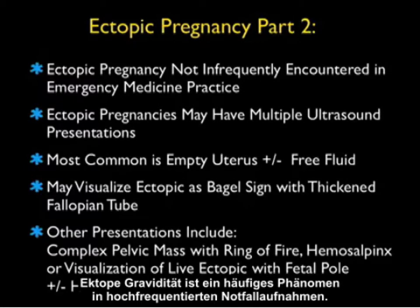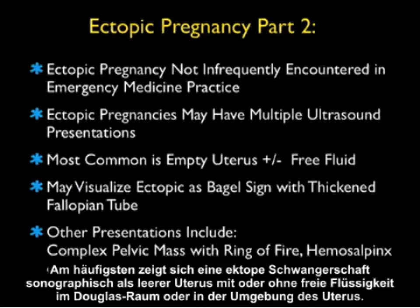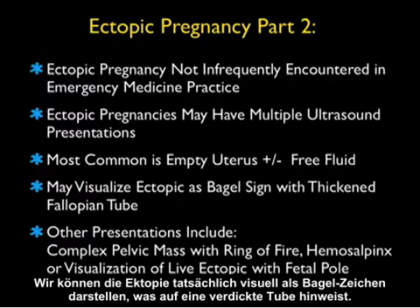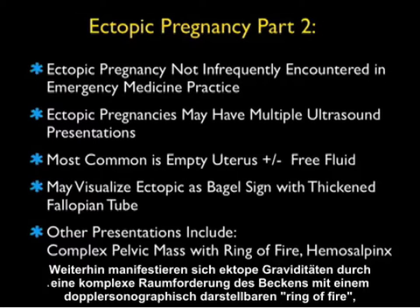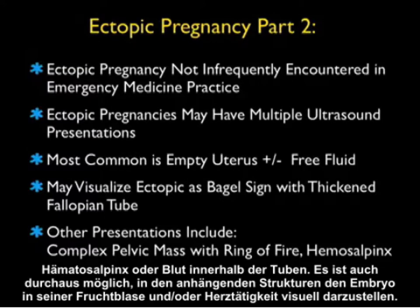Ectopic pregnancy is one of those conditions we'll not infrequently encounter in a busy EM practice. The most common presentation will be an empty uterus with or without free fluid within the pelvic cul-de-sac or surrounding the uterus. We may be able to visualize the ectopic as a bagel sign, which constitutes a thickened fallopian tube. Other presentations include a complex pelvic mass with a ring of fire on Doppler sonography, hemosalpinx or blood within the fallopian tube, or a live ectopic in the adnexa with a fetal pole and/or heartbeat.